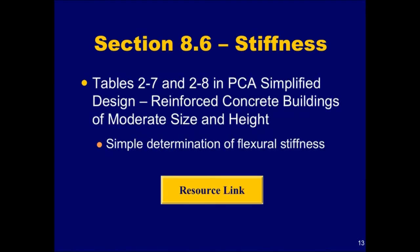Selection of the stiffness factors can be greatly simplified by using tables 2-7 and 2-8 in PCA's Simplified Design publication. The stiffness factors are based on gross section properties, neglecting any reinforcement.